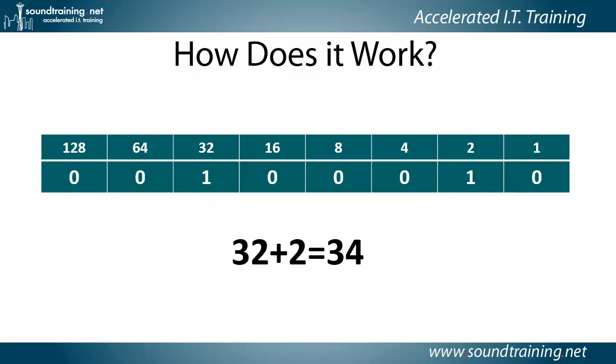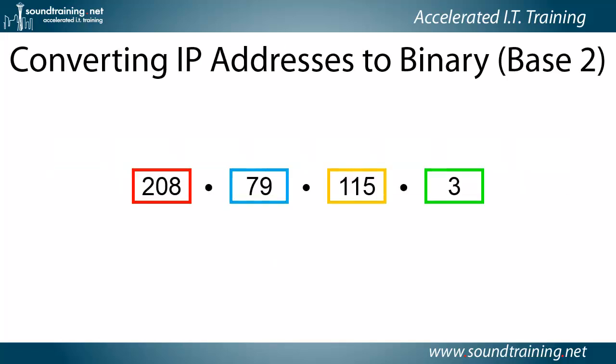In the real world, you may see 5 or 6 bits turned on, but it's the same thing — you just add up the decimal values of the bits that are turned on to get the decimal value of the byte. Now let's dissect that address a little more. Each one of the bytes represents an 8-bit binary number.